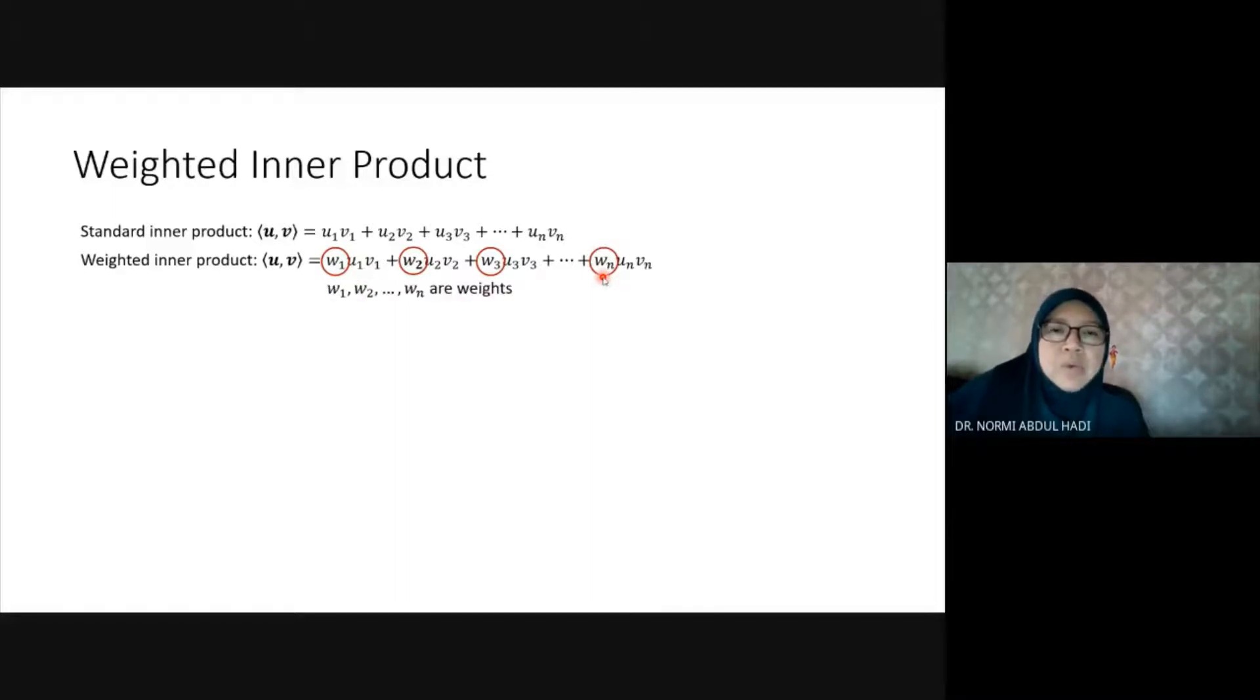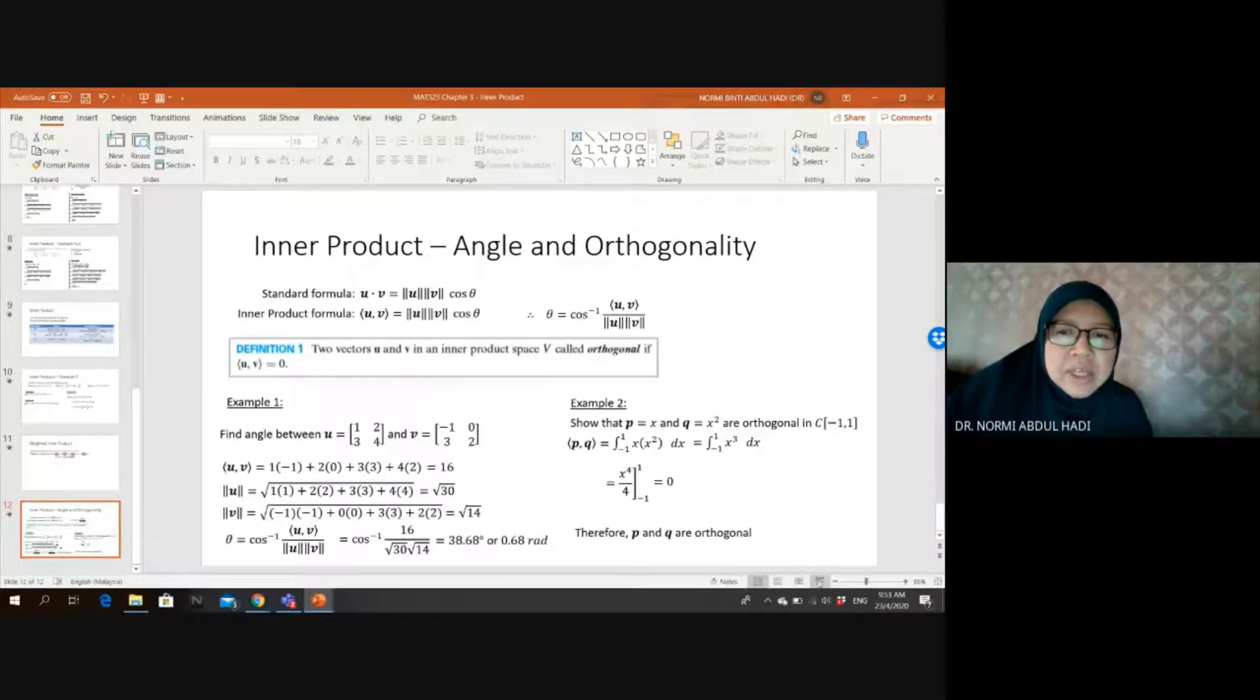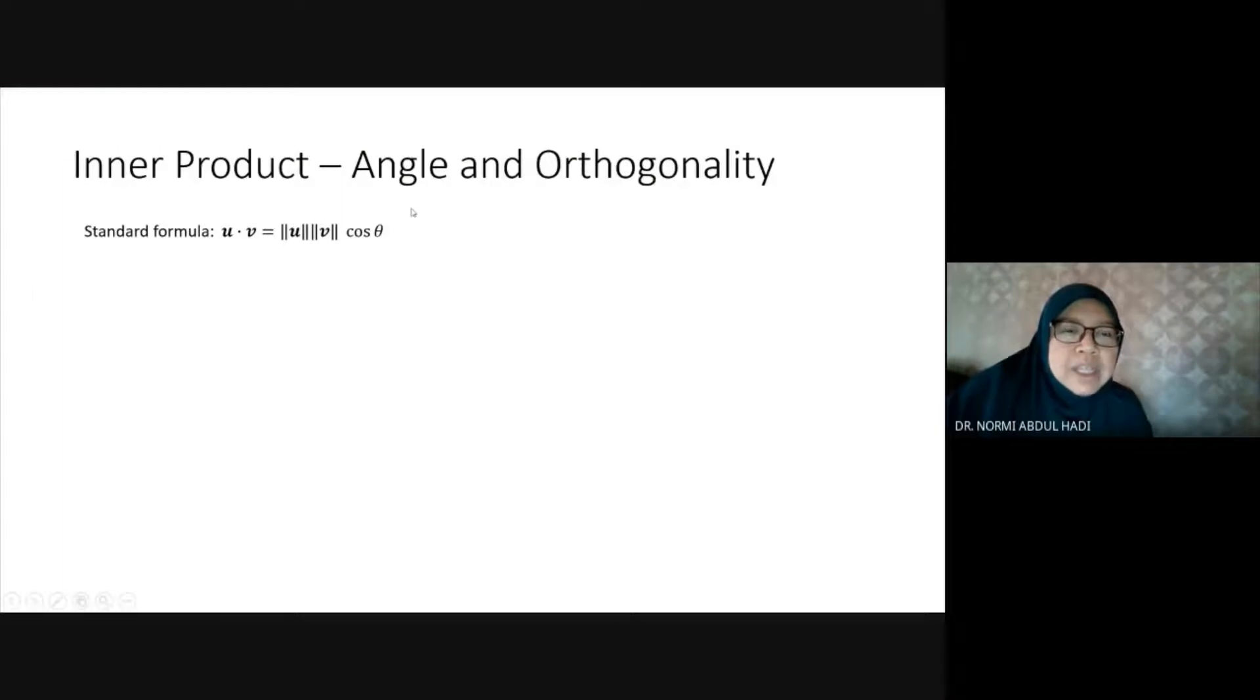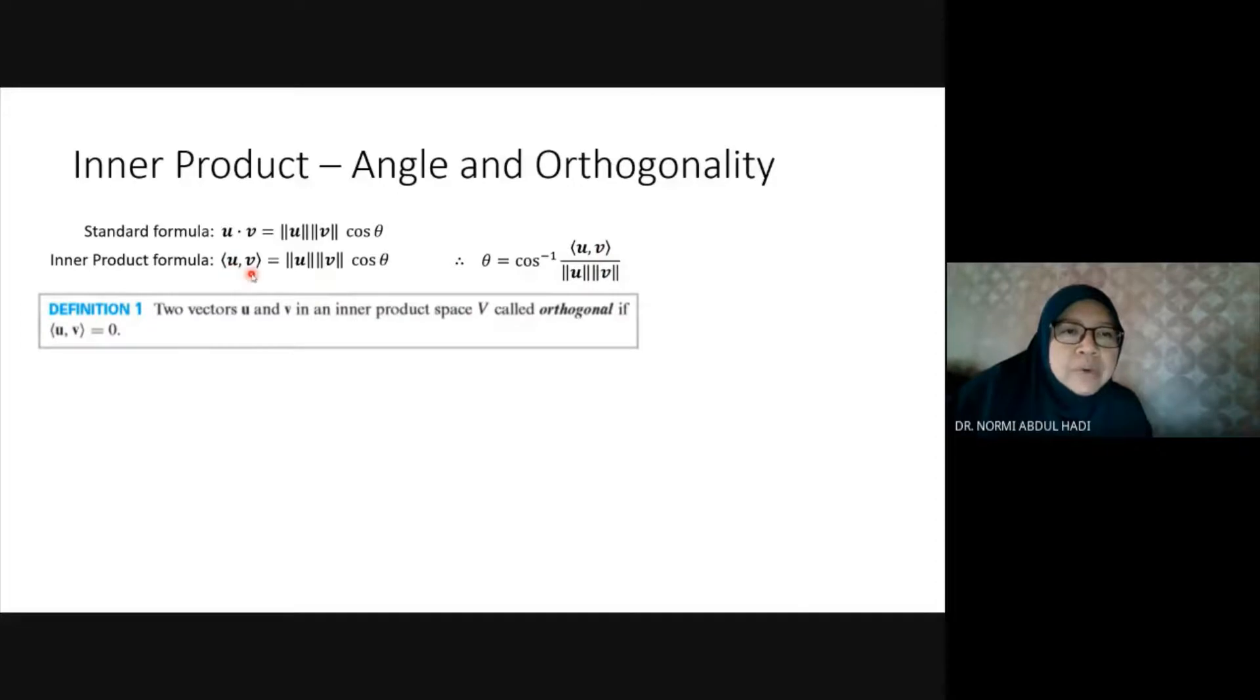Angle and orthogonality: u·v equals the magnitude of u times magnitude of v times cos(θ). How to find θ? θ = arccos((u·v)/(||u|| ||v||)). If the inner product equals zero, u and v are orthogonal.